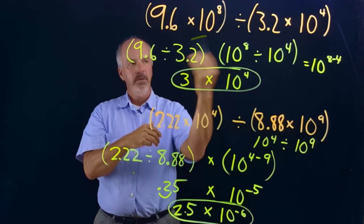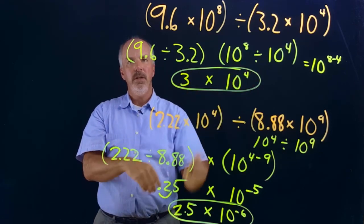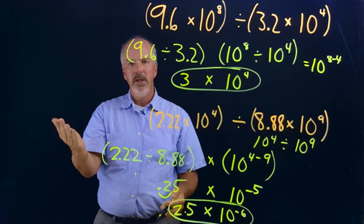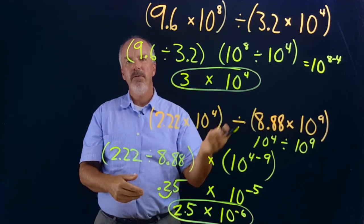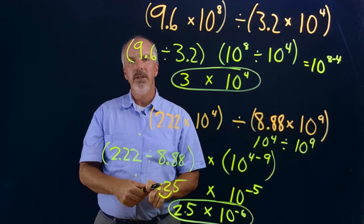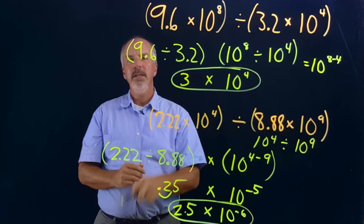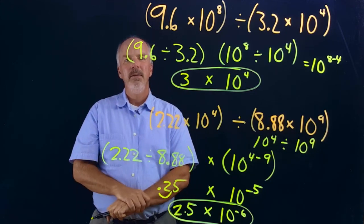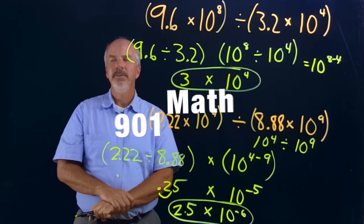So that's how you multiply and divide in scientific notation. We covered division and multiplication in this video — this is Part 4 of scientific notation. Thanks for watching, hit the subscribe button, and we'll see you in the next video.